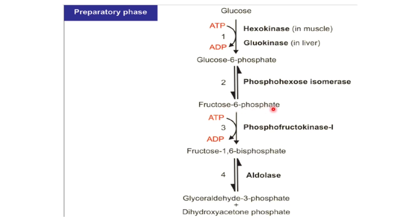Now fructose-6-phosphate is again phosphorylated by phosphofructokinase-1 enzyme into fructose-1,6-bisphosphate, and again there is utilization of one molecule of ATP. This is the second irreversible step of glycolysis and the committed step — meaning once fructose-1,6-bisphosphate is synthesized, it must enter the glycolytic pathway. This is the rate-limiting step of glycolysis. After fructose-1,6-bisphosphate is synthesized, it is cleaved into two three-carbon molecules — glyceraldehyde-3-phosphate and dihydroxyacetone phosphate — by aldolase enzyme. Aldolase is an example of a lyase enzyme.